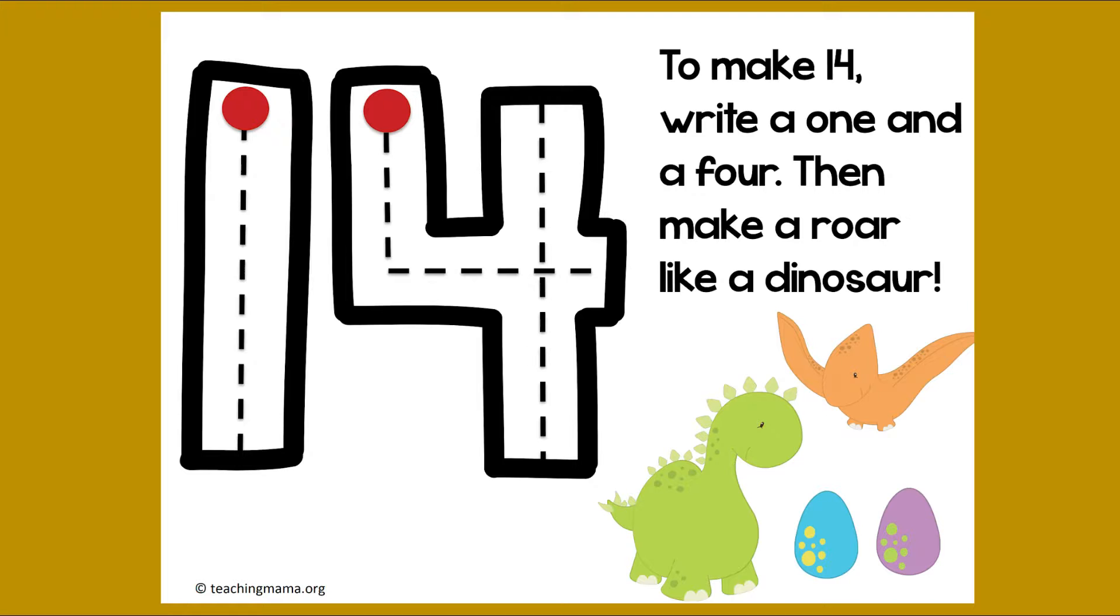Let's try it again. Ready? Start at the top. Straight line down. Jump back up to the top. Make our 4. Down and over and down, down some more. Then make a roar like a dinosaur. Roar.